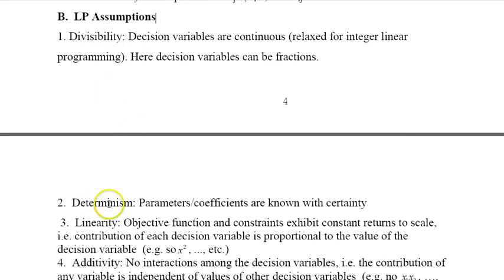The second assumption is determinism, which means my parameters or the coefficients are known with certainty. Everything is known here. There are no sources of randomness. Everything is determined.